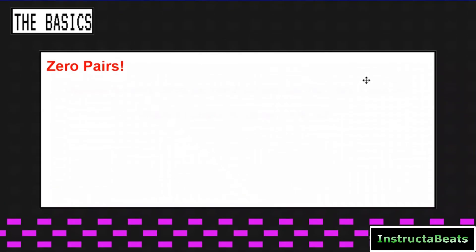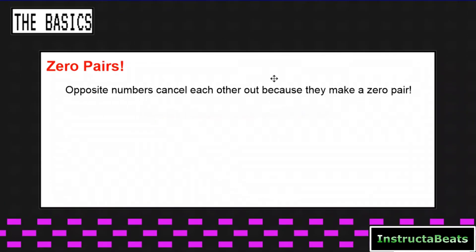But first before we get started, we need to know the basics. Zero pairs. Zero pairs are opposite numbers that cancel each other out because they make a zero pair. Their two absolute values cancel each other out and bring us back to zero. If you need help with this concept, check out our card up here — we have an awesome zero pair lesson using a number line so you can really see it.